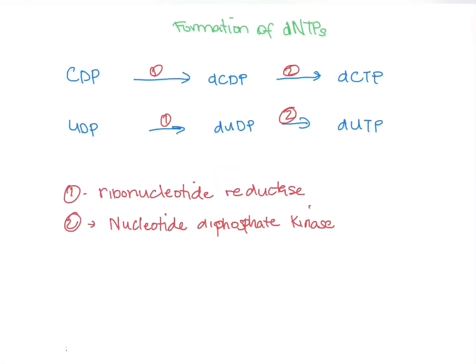Now let's look at the formation of dNTPs. Ribonucleotides are converted to deoxyribonucleotides in two steps: first, ribonucleotides are converted to their deoxyribonucleotides through ribonucleotide reductase; in the second step, these deoxyribonucleotides are phosphorylated, which requires a diphosphate kinase enzyme.